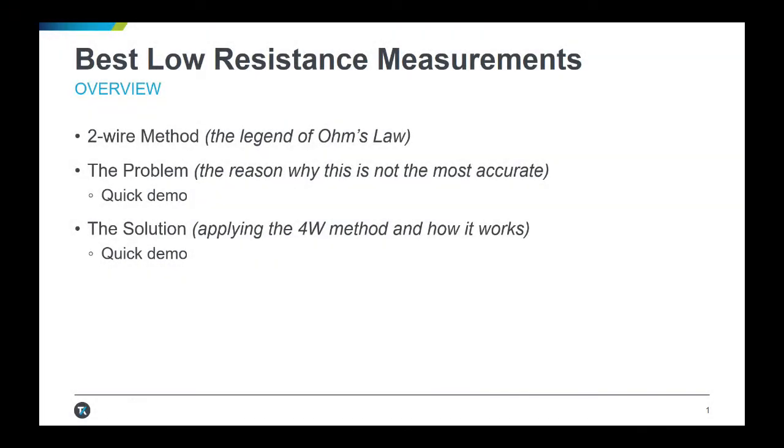First, we will briefly review Ohm's law as it applies to a standard two-wire measurement. Then we will examine why this can be problematic for low resistance values and provide a demonstration of this error. Finally, we will identify the corrective solution—the four-wire measurement method and the details about how it works—and conclude with a demo of the four-wire measurement method in action.